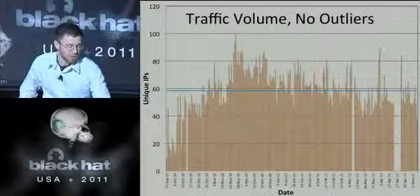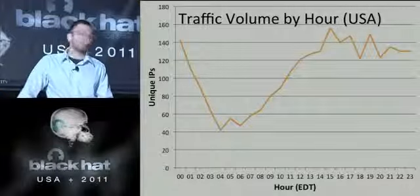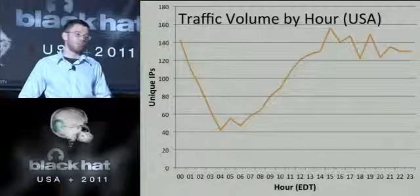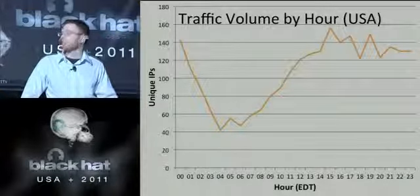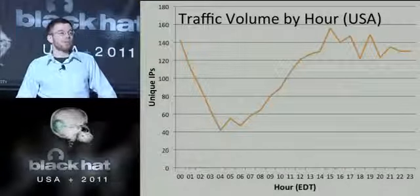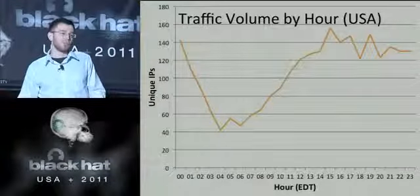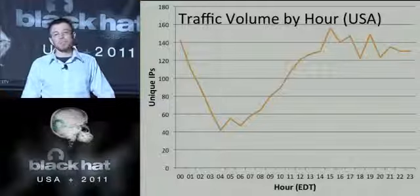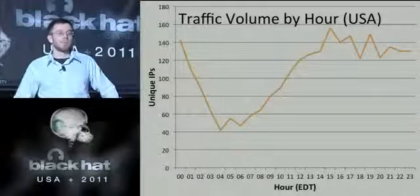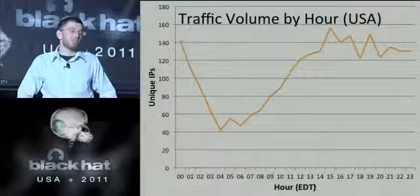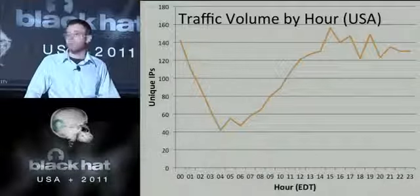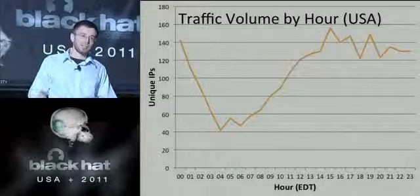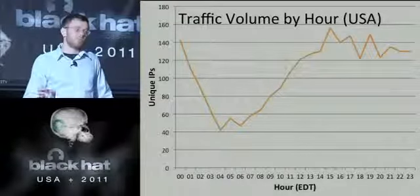I also graphed traffic volume by hour for IPs geolocated to the United States, normalized to Eastern time. I originally suspected warmer parts of the day would see more bit errors due to heat on outdoor electronics. But it's difficult to separate that because most people just use their computers in the daytime. Interestingly, this graph nearly exactly matches the normal North American internet traffic graph, suggesting it is likely a random process redirecting users to my domains rather than some specific vulnerability.